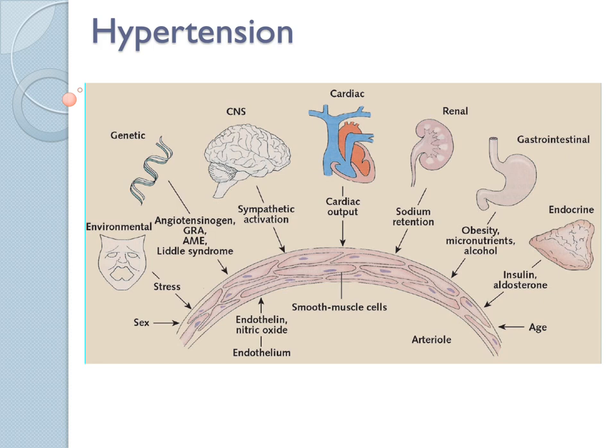High blood pressure can be contributed by various factors. For example, there's constriction, basal constriction, and over-constriction of the smooth muscle walls — smooth muscles in the blood vessel wall — which can be due to overload of fluid, and so on.